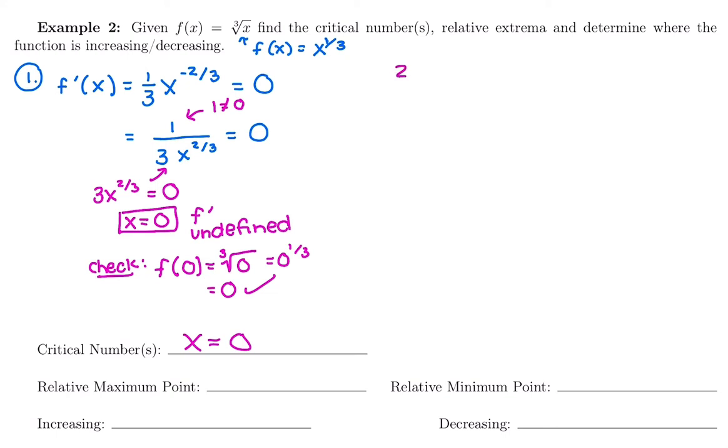A little bit extra work with finding that critical number compared to if it were a polynomial function, where it automatically went into the original. So as long as it made the derivative 0 or undefined, we were good to go to call it a critical number.